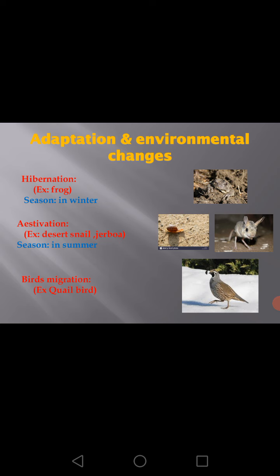Other animals like the jerboa, desert snails, and some insects hide themselves in burrows in summer, so they undergo estivation — to overcome the rising temperature, shortage of water, and lack of rain in summer.